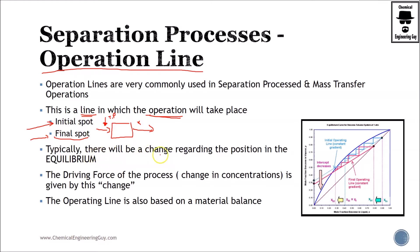Typically there will be a change regarding the position in the equilibrium. If you remember about binary diagrams, we have this diagram and we typically have this 45 degree line in which the molar composition of the liquid equals the vapor composition of the vapor. That's why we have this straight line. We use it because it's a good point to have a guide especially when we have much greater equilibrium lines which cross that line.